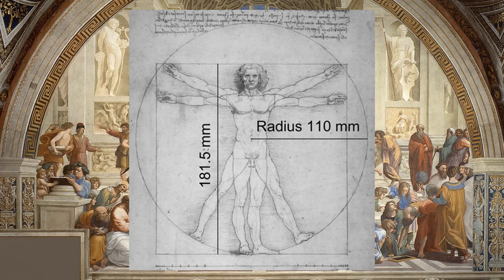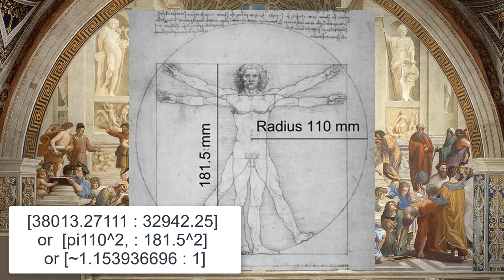It would seem that da Vinci encoded both a circle that squares his square and a square that circles his circle. But there's also something inherently special about the relationship between da Vinci's original circle and square — the ratio of the area of da Vinci's circle to the area of da Vinci's square is about 1.154.